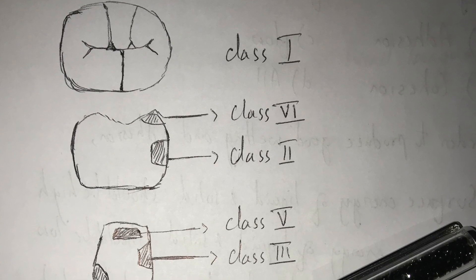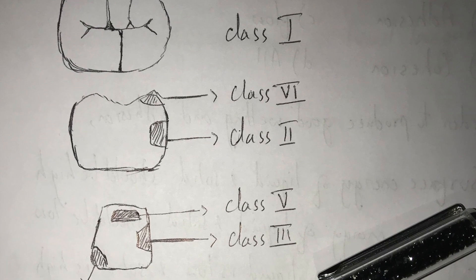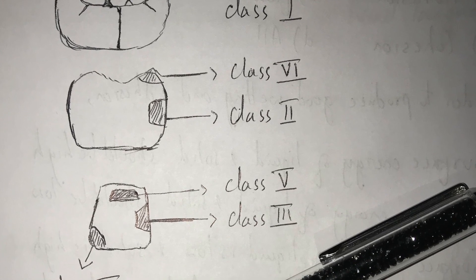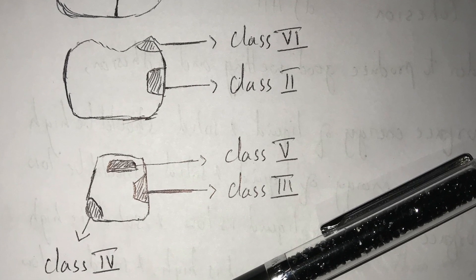So if you look into the classification given by G.V. Black, way back in 1908, Greene Vardiman Black has given a classification for cavities.